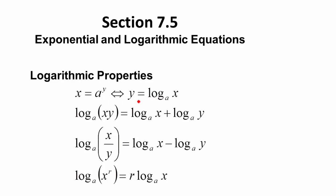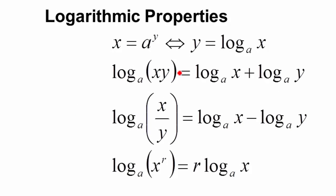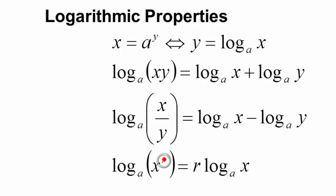These three properties are a reminder from section 7.4. If you have the log of a product xy, it's equal to the log of x plus the log of y. Division becomes the minus sign: the log of x over y equals the log of x minus the log of y. And if you take the log of x raised to the r, it's equal to r times the log of x — you bring down that exponent r to the front.